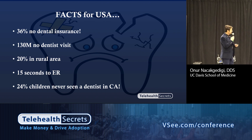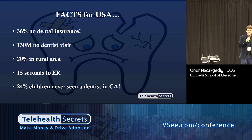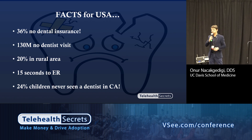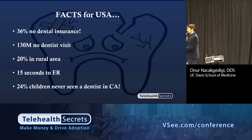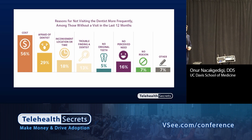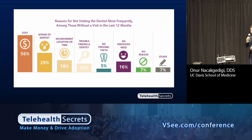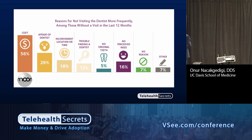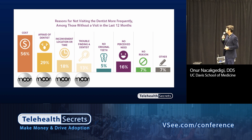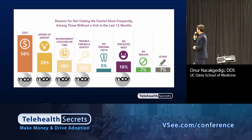This is Silicon Valley. When I compare the reasons between the refugee camp and the United States, we have the same reasons — but it's not acceptable here. We have high technology, great people, and many people working for public health. What are the reasons? Firstly, cost — it's so expensive. Also, fear of dentists — very common. Inconvenient location or time, trouble finding a dentist, a perceived non-urgent need. We can handle all of those problems with teledentistry.